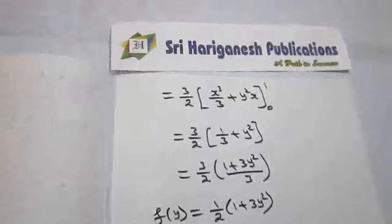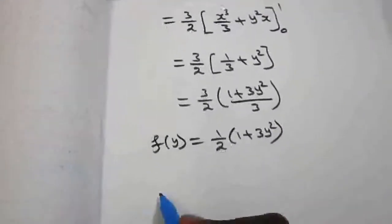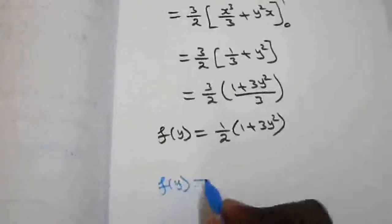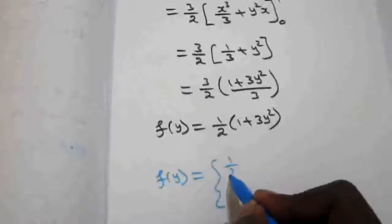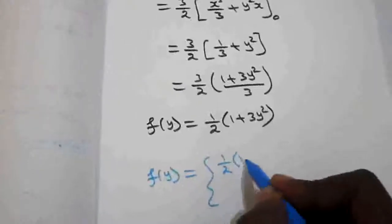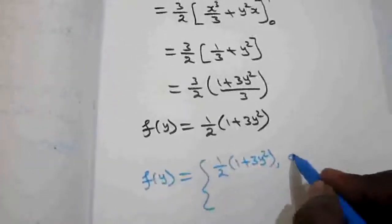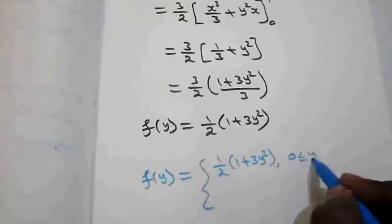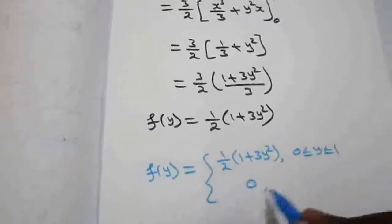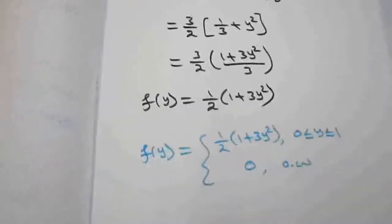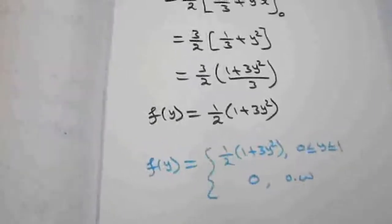The marginal density function of y is f(y) = (1/2)(1 + 3y²) for 0 ≤ y ≤ 1, and 0 otherwise.